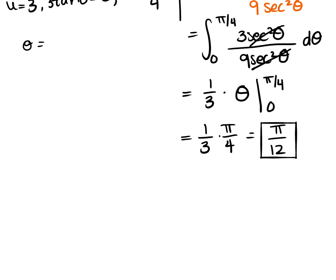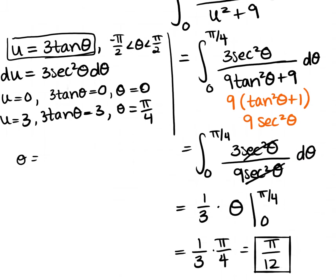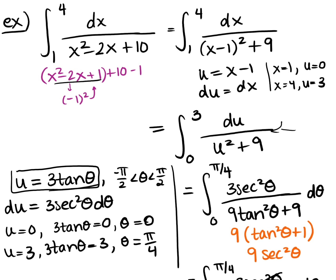So trig substitution can be super helpful even when the integral doesn't obviously look like it needs one. Once we completed the square and saw a perfect square binomial, that was a signal to try a trig sub. Please let me know if you have any questions.